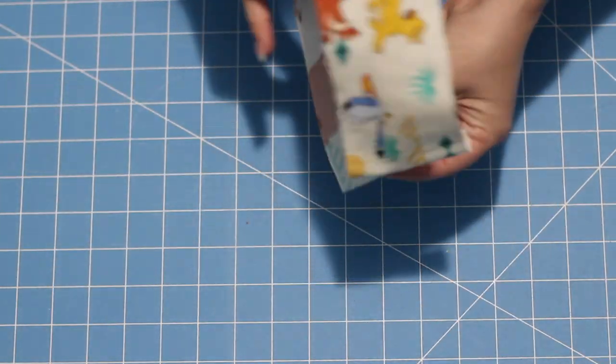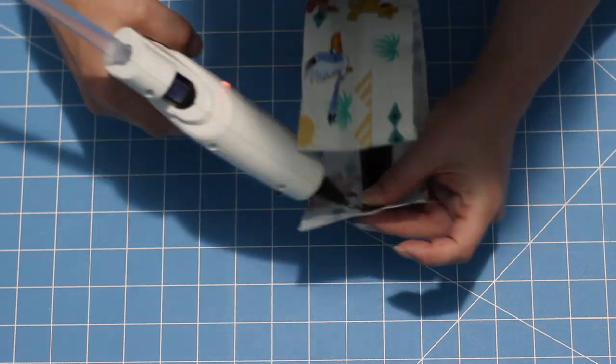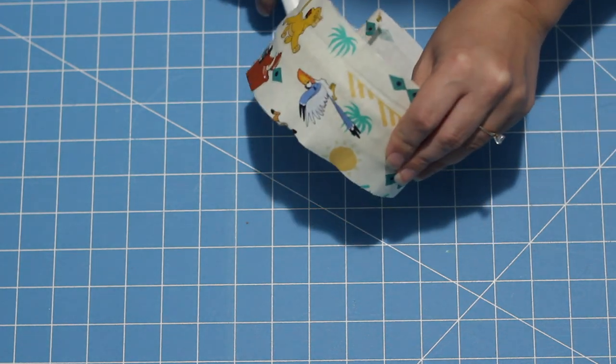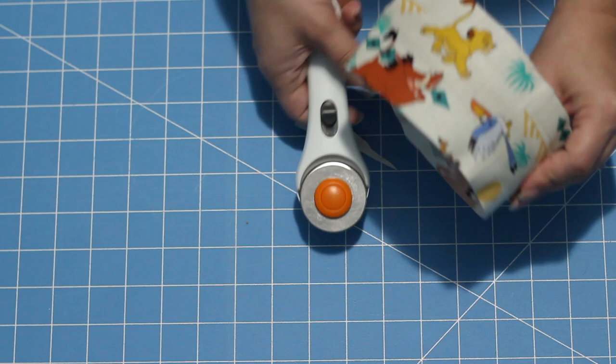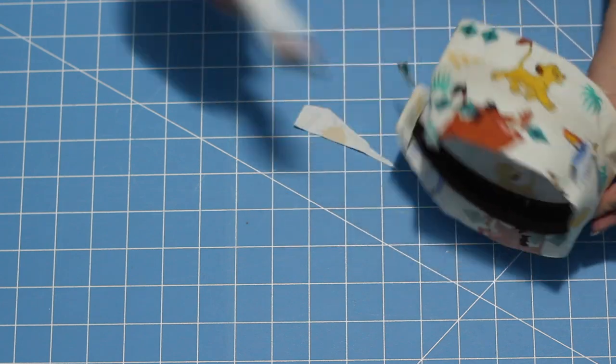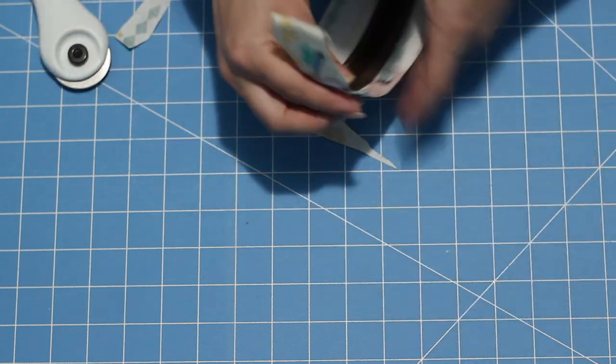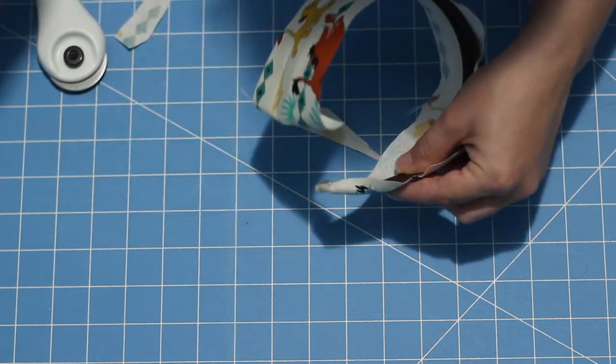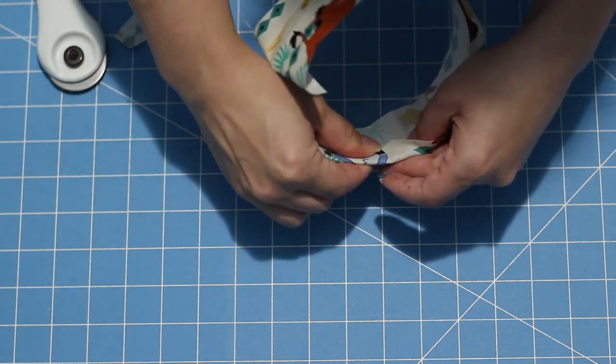And then to actually attach it to the headband, I put a little bit of hot glue on the inside of the headband and fold the fabric inward. And then I do go ahead and cut it into kind of a tapered shape because headbands tend to taper at the end. And then this part is tedious, but I don't know a better way to do it.